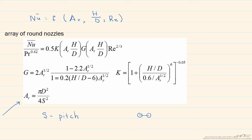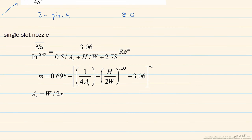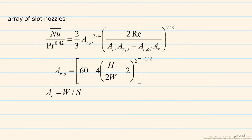The third correlation is for a slot nozzle, which is very similar to a round nozzle. However, instead of using D we use W, and instead of using R — the radius of the cell — we use X, which is the length. Finally, there is a correlation for an array of slot nozzles. Again for the array we have a pitch, but this pitch is defined differently: when you have plates with slots in between, the pitch is from one edge to the other edge.